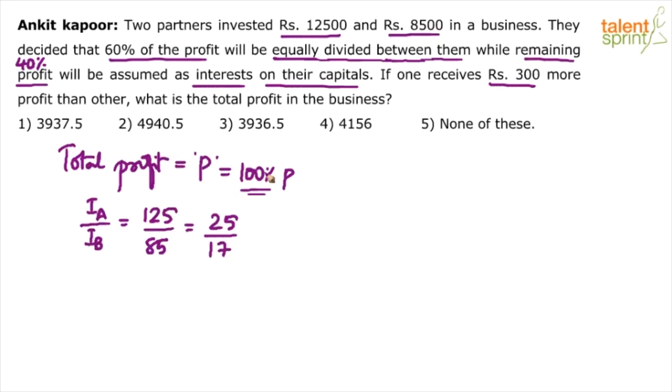Tell me who will get more interest? Obviously A will get more interest because A invested more amount. 60% will divide equally, but out of remaining 40%, A will get a bigger share. So obviously total of A is more than total of B. When one receives 300 more than the other, A has got more.